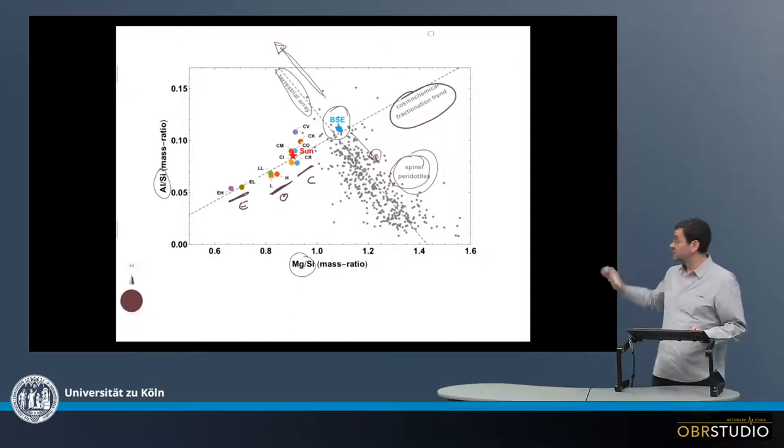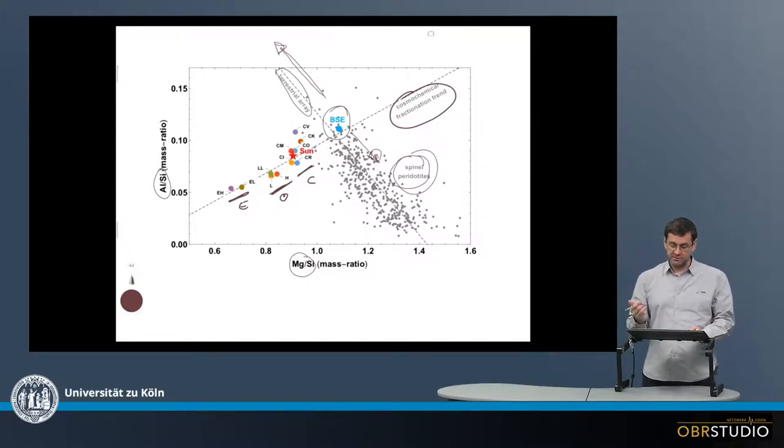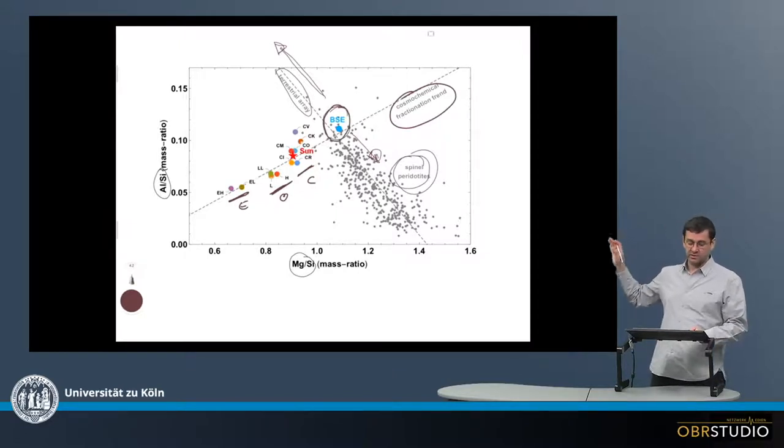And this is called the cosmochemical fractionation trend. And one intriguing bit here is that the cosmochemical fractionation trend and the terrestrial fractionation trend intersect at exactly the bulk silicate Earth composition.